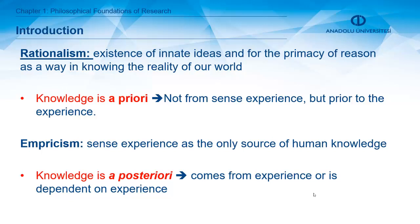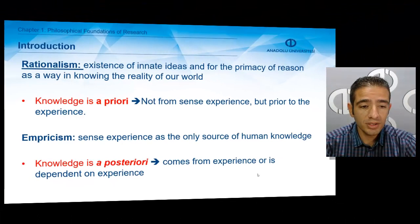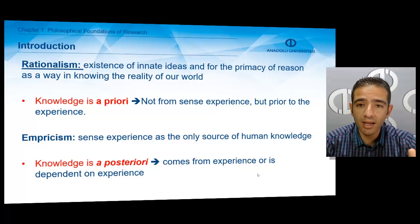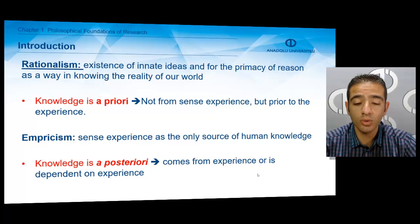Rationalism focuses on innate ideas. According to the rationalist perspective, knowledge is a priori — meaning we do not gain our knowledge from senses or experiences; it already exists in our mind prior to experience. Empiricism, on the other hand, holds that sense experience is the only source of human knowledge. For this reason, empiricists think that knowledge is a posteriori — it comes from experience.